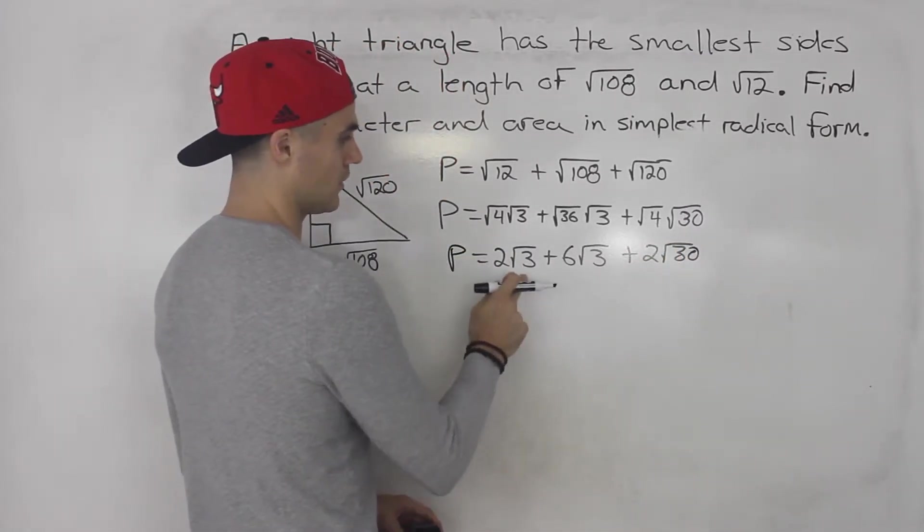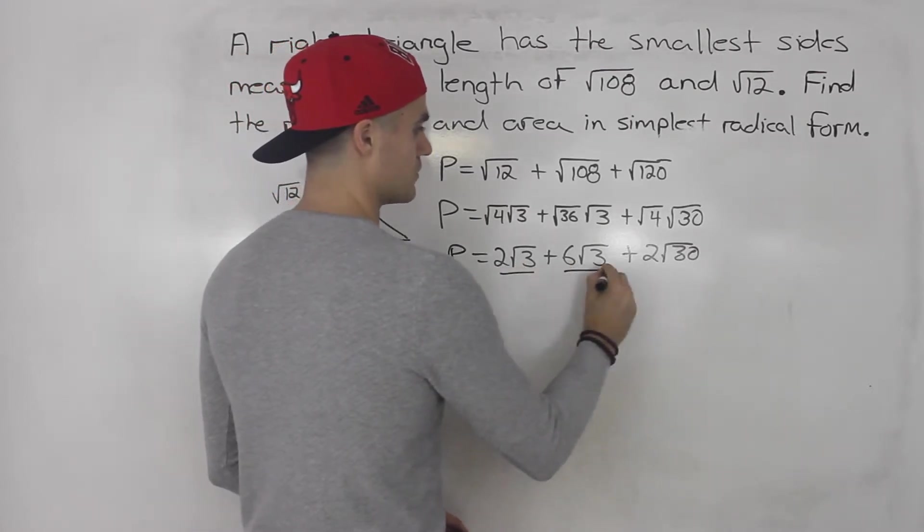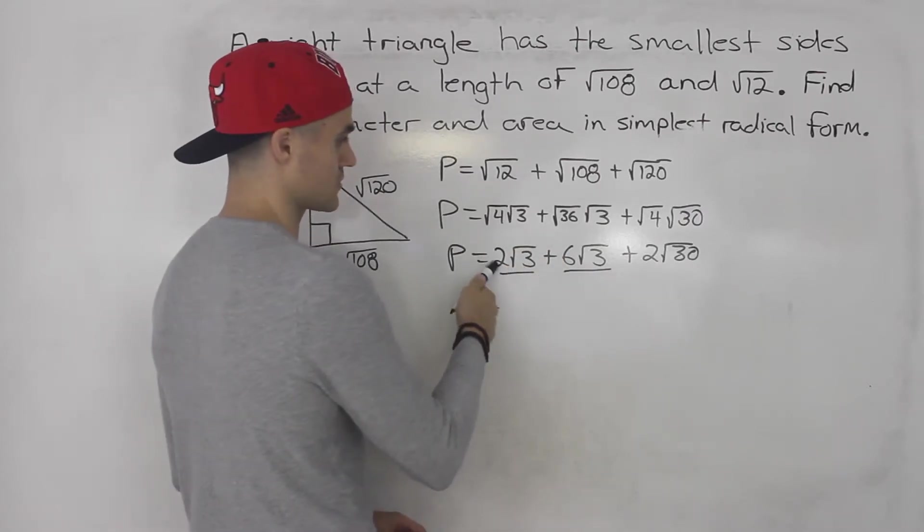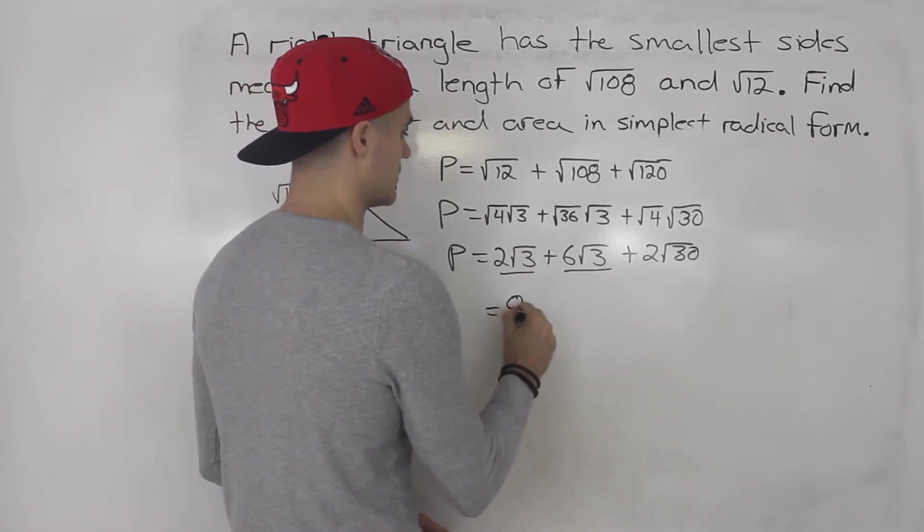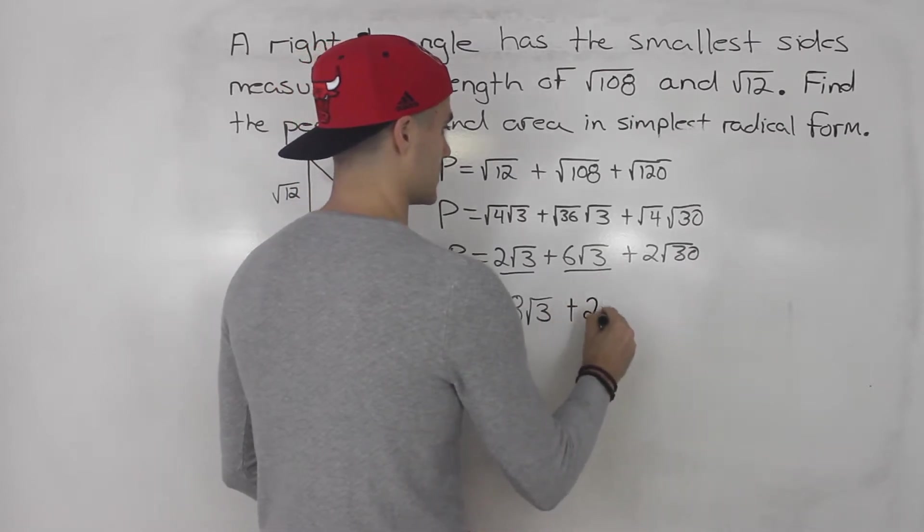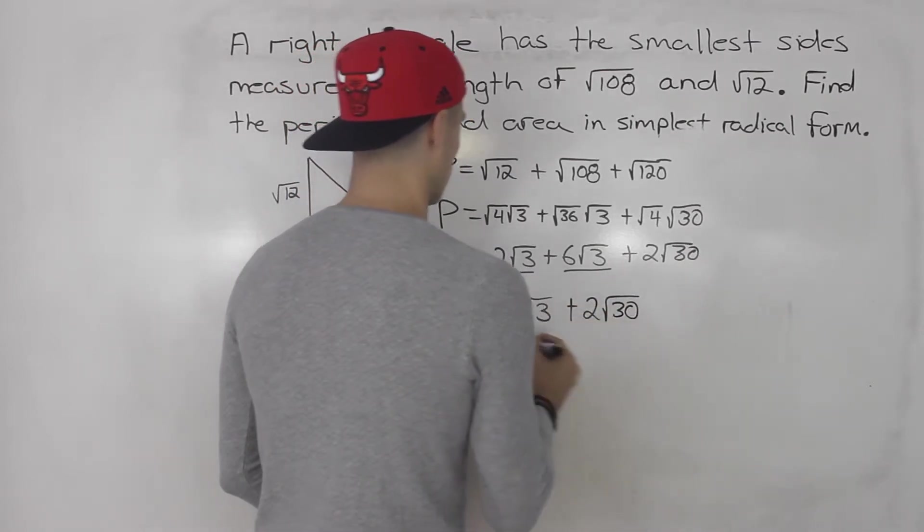So from here, notice that these two are like terms. They have the same radicals. So we could add the coefficients in front. So 2 plus 6 gives us 8. The radical stays the same, plus 2 root 30.